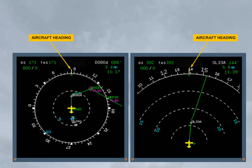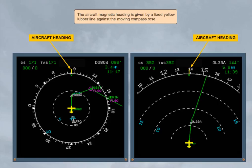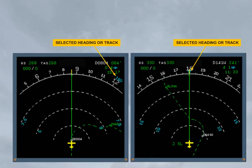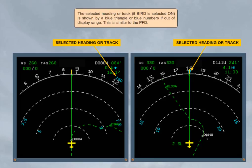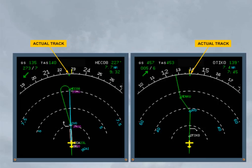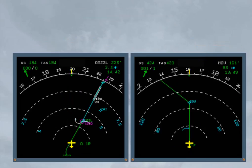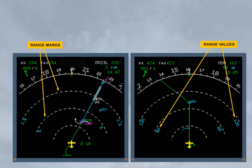The aircraft magnetic heading is given by a fixed yellow rubber line against the moving compass rose. The selected heading or track, if TRK is selected on, is shown by a blue triangle or blue numbers if out of display range. This is similar to the PFD. Actual track is depicted by a green track diamond.